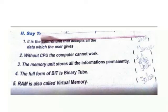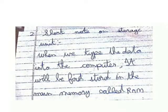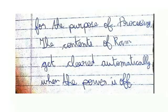Write a short note on memory units. When we type the data into the computer, it will be first stored in the main memory called RAM. For the purpose of processing, the content of RAM gets cleared automatically when the power is off. Full forms: ALU — Arithmetic Logic Unit, MU — Memory Unit, CPU — Central Processing Unit.